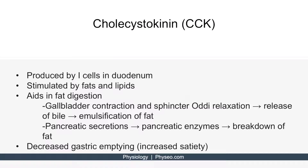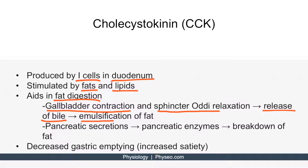First, let's talk about cholecystokinin, or CCK. These are produced by the I cells in the duodenum, and these I cells are stimulated to release CCK when fats and lipids enter the duodenum. CCK aids in fat digestion by causing gallbladder contraction and relaxation of the sphincter of Oddi, which causes the release of bile to help emulsify fat. CCK will also stimulate pancreatic secretions, causing the pancreas to release enzymes such as lipase to help break down fat.